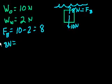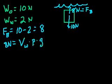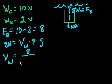And what is the weight of the water displaced? That's the volume of the water displaced times the density of water times gravity, right? And so what is the volume of water displaced? Well, it's just the volume of water. Divide 8 newtons by the density of water is 1,000 kilograms per meter cubed.